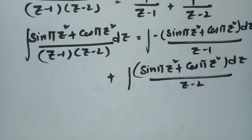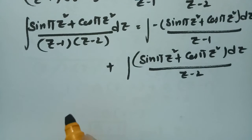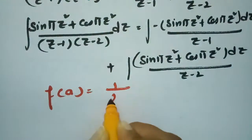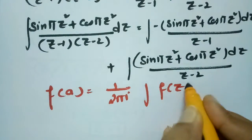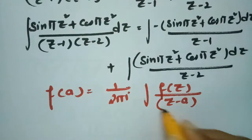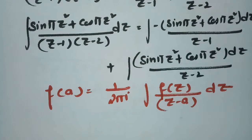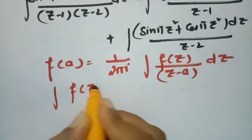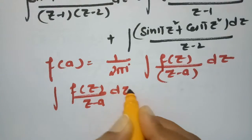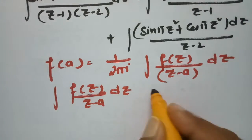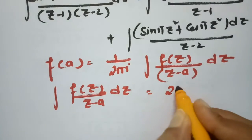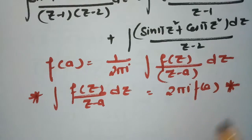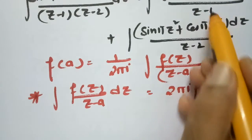According to Cauchy's integral formula: f(a) = (1/2πi) ∫ f(z)/(z−a) dz. Rearranging, ∫ f(z)/(z−a) dz = 2πi · f(a). We can use this formula since the singular points 1 and 2 both lie within the contour.